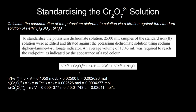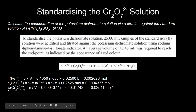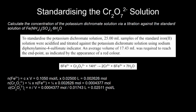We're now going to apply the 6 to 1 stoichiometric ratio from the equation given in the question to determine the number of moles of dichromate consumed in this titration. And we finally determine the initial concentration of dichromate by taking that number of moles and dividing it by the average titre value of this titration. So we've determined the initial concentration of dichromate.